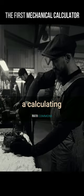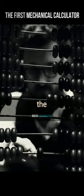In 1642, young Blaise designed a calculating machine that helped his father speed up the process.